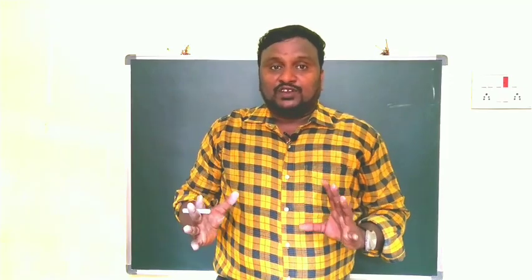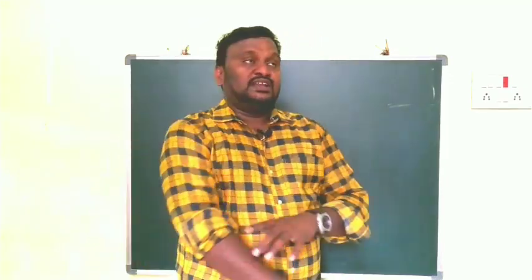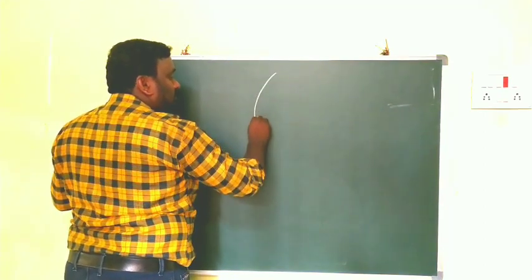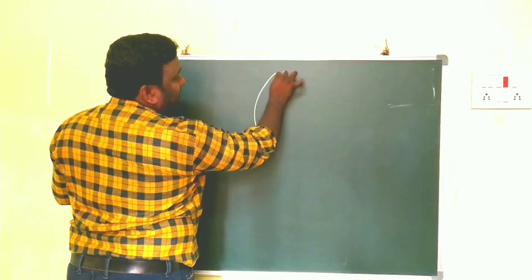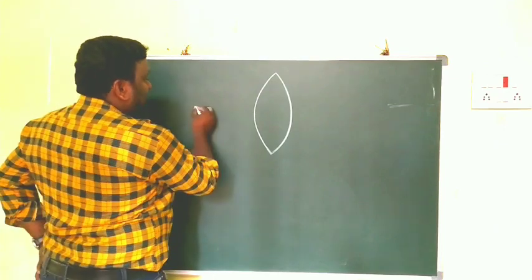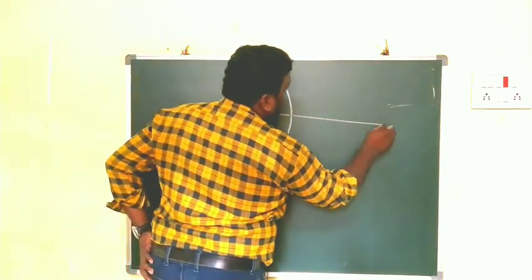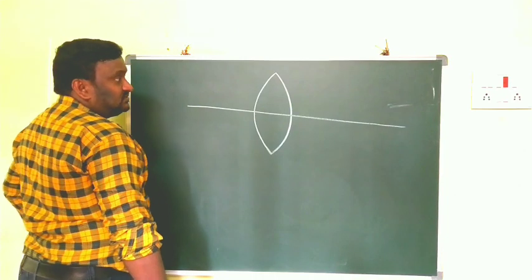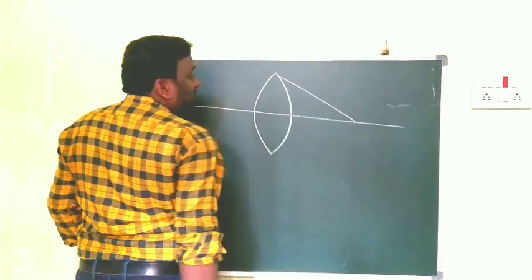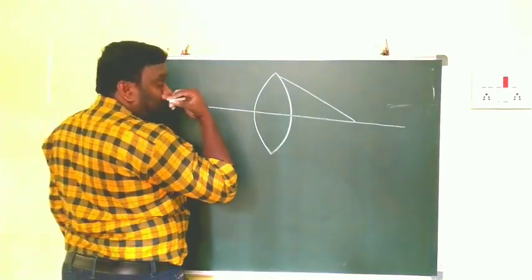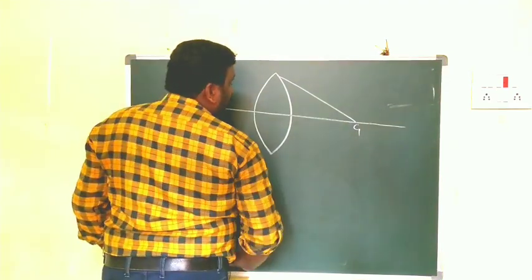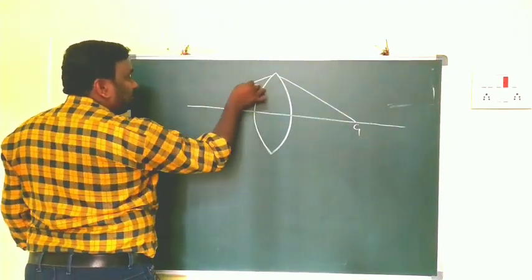Now, how we can find out the focal length of a convex lens in ray diagrams. This is the convex lens and this is the principal axis. If we draw normals to the surfaces, they meet at C1 and C2 respectively.